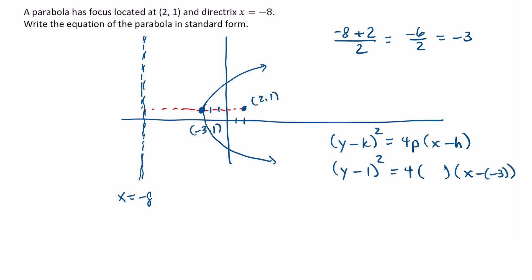Now remember, p is the displacement from either the vertex and the focus or the vertex and the directrix. The vertex and the focus are five units apart, and the focus is on the right of the vertex, which means that p must be equal to 5.